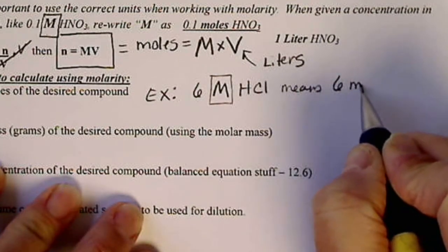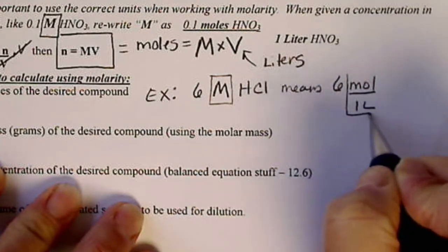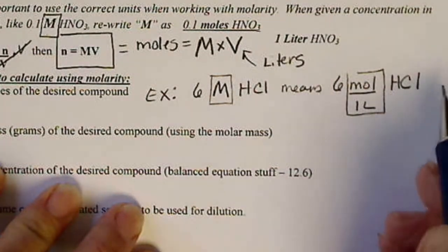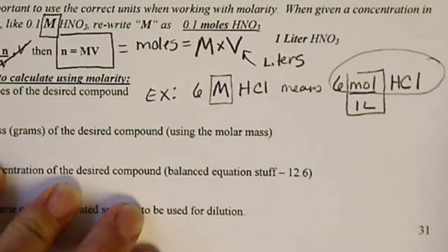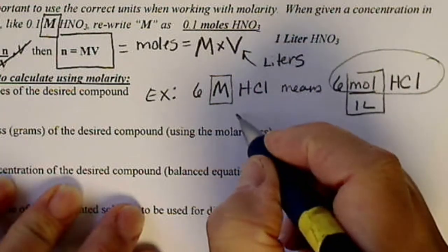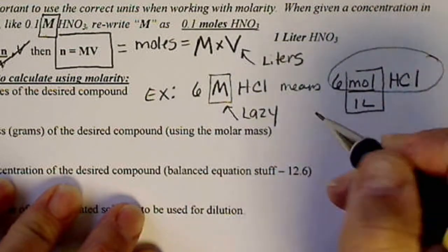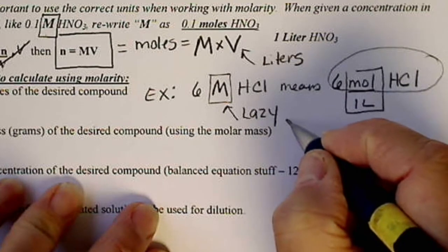And instead of writing capital M, we're going to write moles per 1 liter of HCl. And then if we need to solve for moles, we see that we have that in the numerator.